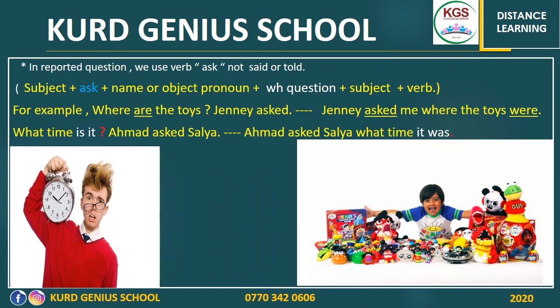Look at the two images. One big point you have to know is that we use the verb 'ask' in reported speech question form — not 'said,' not 'told.' We use 'said' and 'told' in the statement, but in reported speech question we use only 'ask.' Here is the general rule: Subject + ask + a name or object pronoun. After 'ask' there should be an object pronoun or a name. After that, we should have a WH question word — what, when, where — and then subject and verb.